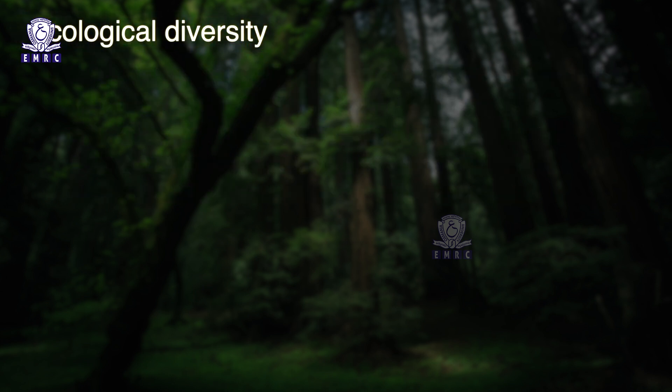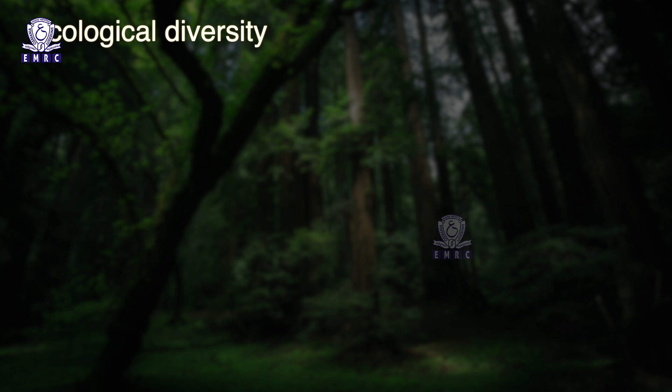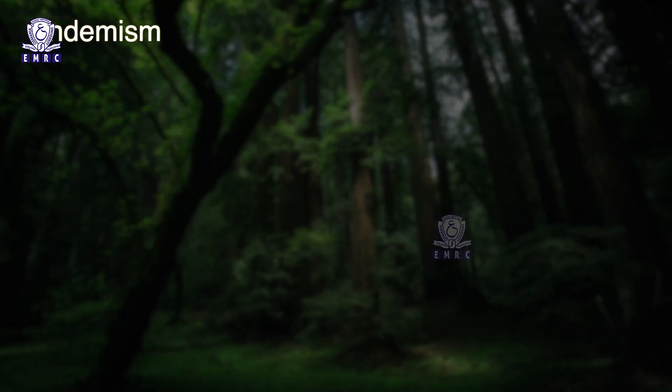Ecological diversity refers to different types of habitats. A habitat is the cumulative factor of the climate, vegetation, and geography of a region. It includes various biological zones like deserts, coasts, estuaries, wetlands, mangroves, coral reefs, etc. At the ecosystem level, India — with its deserts, rainforests, mangroves, coral reefs, wetlands, estuaries, and alpine meadows — has a greater ecosystem diversity than a Scandinavian country like Norway.